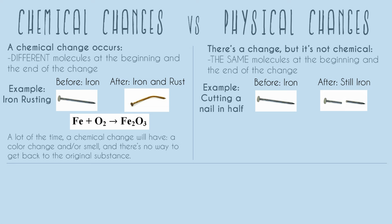For a physical change, we could write a chemical equation, but it would just look the same, so there's no real purpose to it. You're going to see that we don't really write physical changes like this. When you're taking chemistry, most of the problems — probably about 90% of the things you talk about — are going to be chemical changes. We're really focused on how do we make and break molecules and bonds.